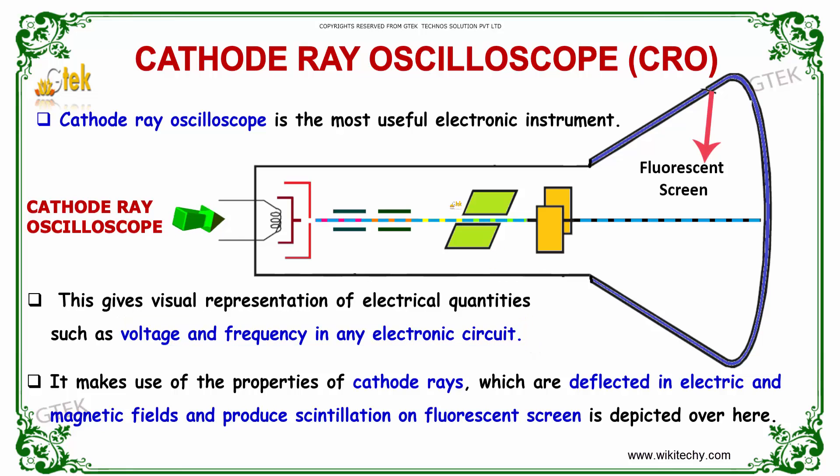It makes use of the properties of cathode rays which are deflected in the electric and magnetic fields and also produce a kind of scintillation on the fluorescent screen. You can see here the fluorescent screen which is over here.